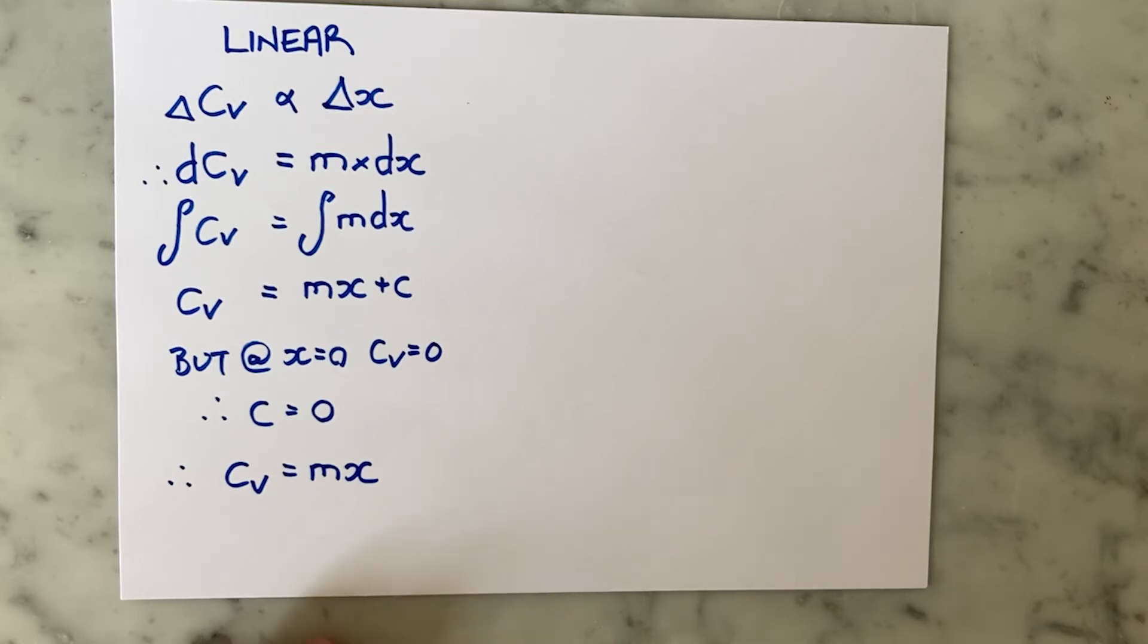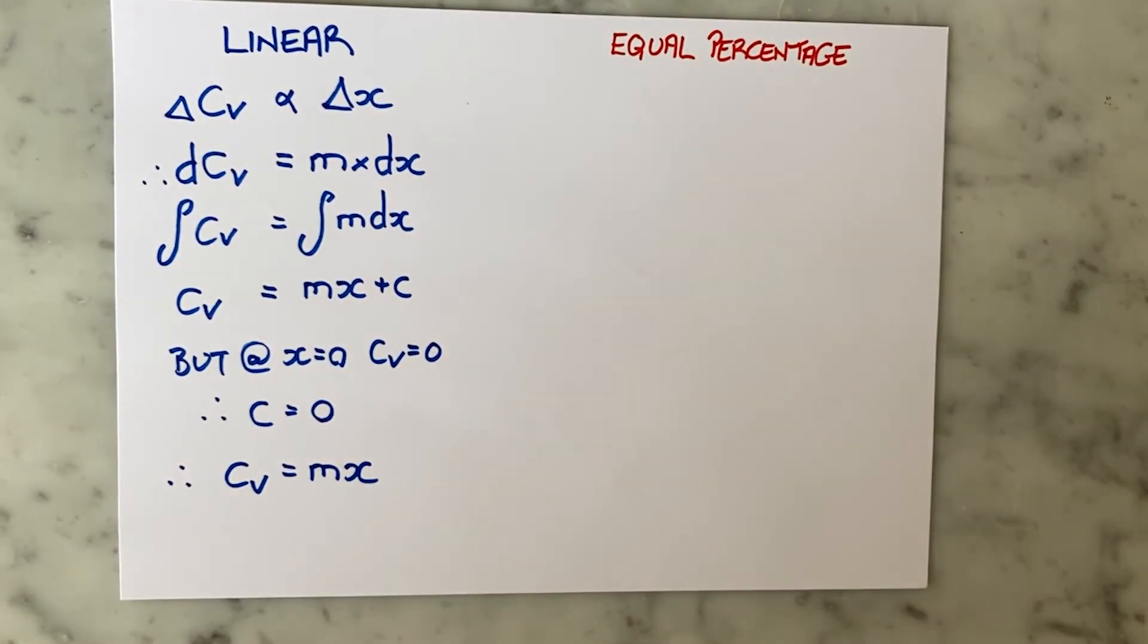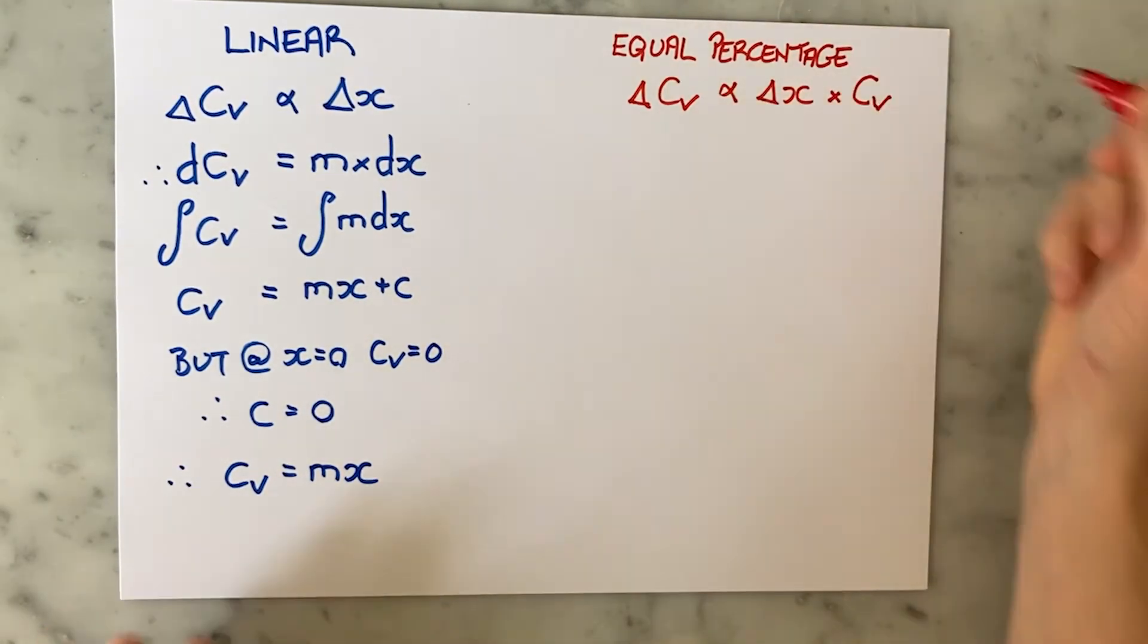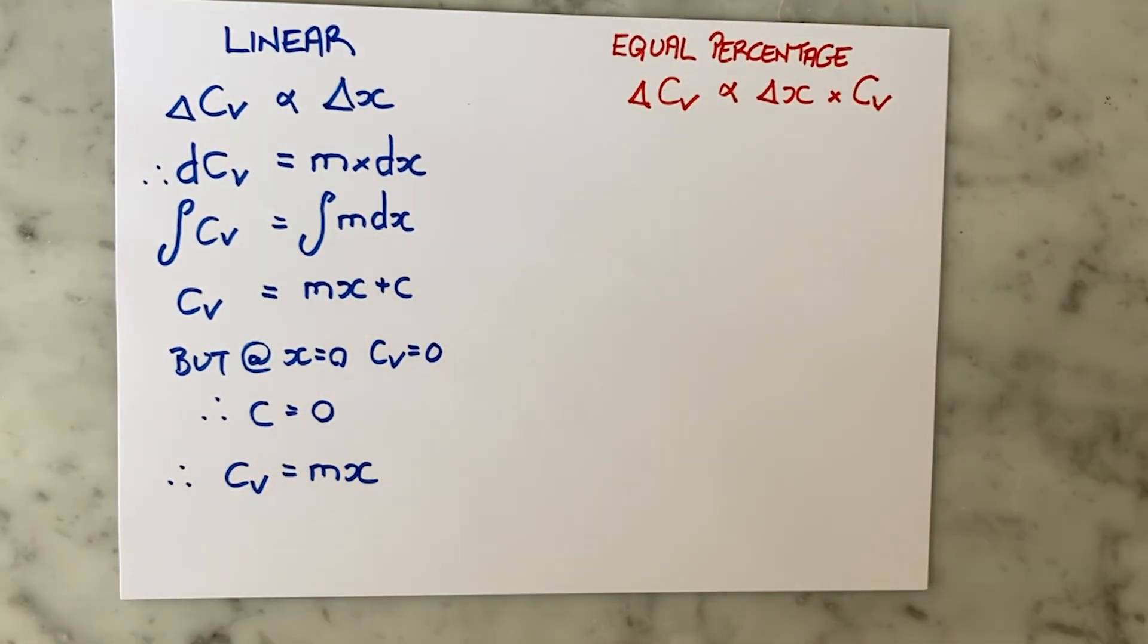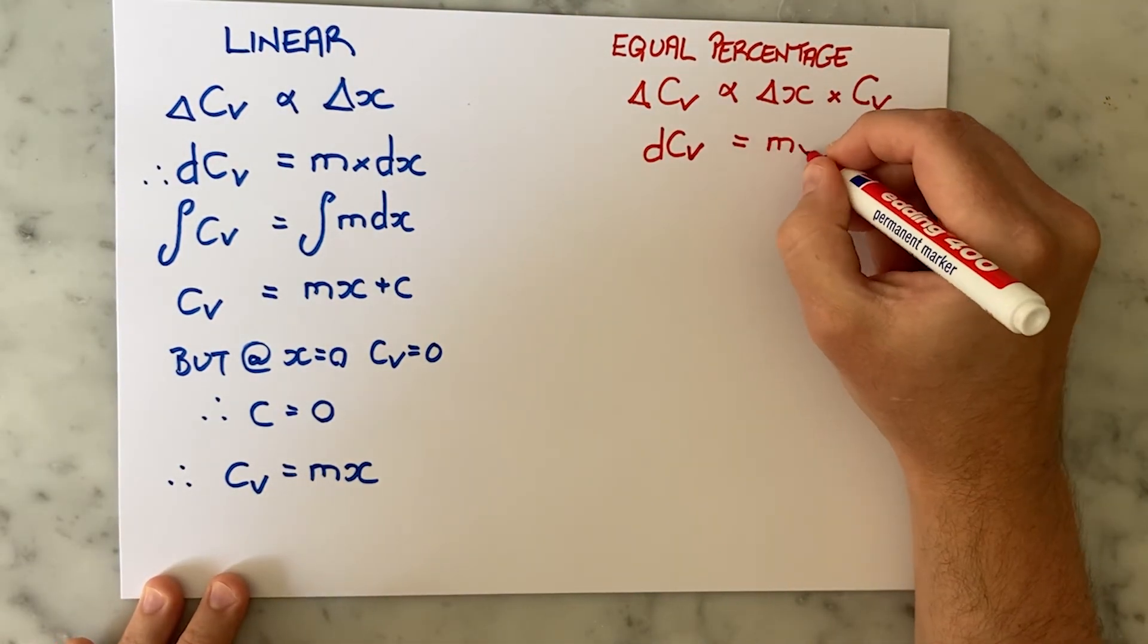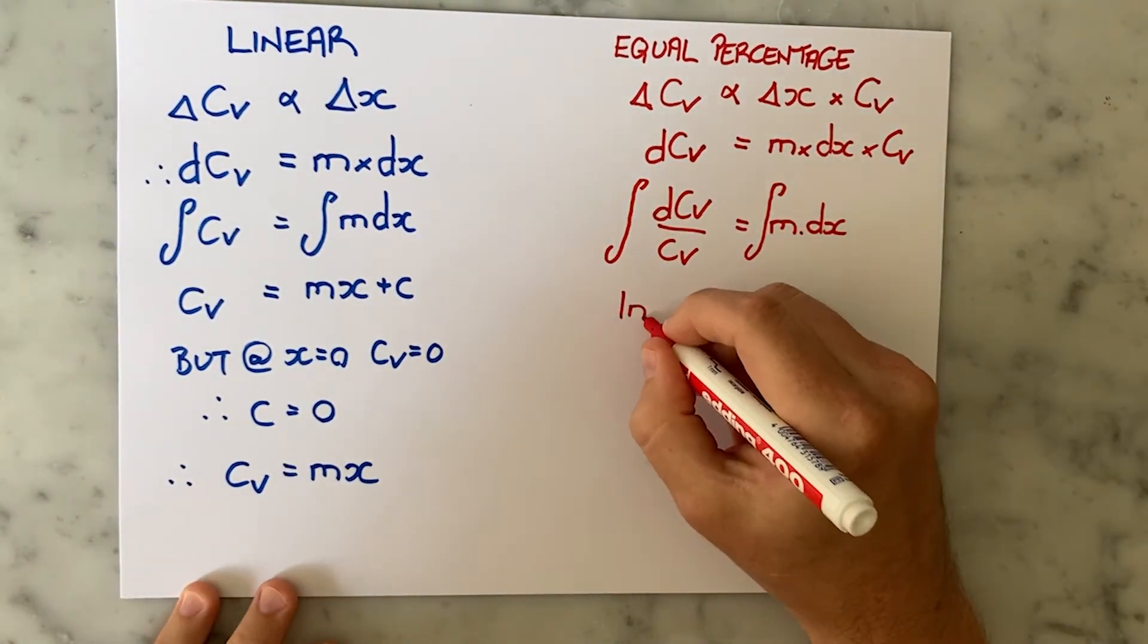For an equal percentage valve, the change in CV is proportional to the change in valve opening just like for the linear valve, but it is also proportional to the CV itself. Integrating this actually lands you with a natural logarithm of CV equaling mx + c.